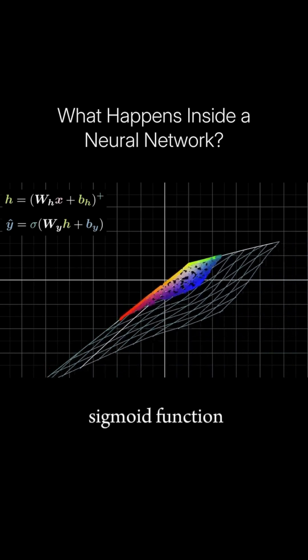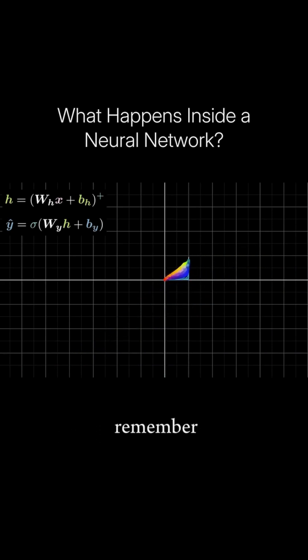And finally, the sigmoid function squishes everything into the unit square, because if you remember, it always outputs a value between 0 and 1.